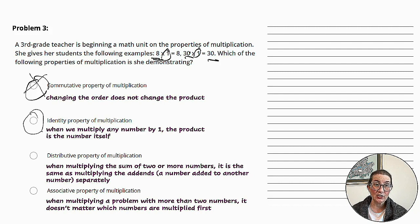Distributive property of multiplication. When multiplying the sum of two or more numbers, it is the same as multiplying the addends separately. The addends are the number added to another number. This is not an example of that. Associative property of multiplication. When multiplying a problem with more than two numbers, it doesn't matter which numbers are multiplied first. There are not more than two numbers here. So this is not the case either. The best answer here is identity property of multiplication.